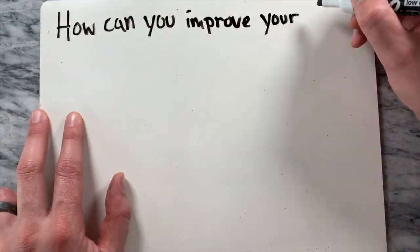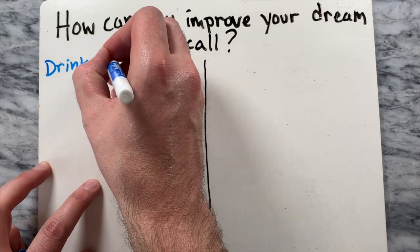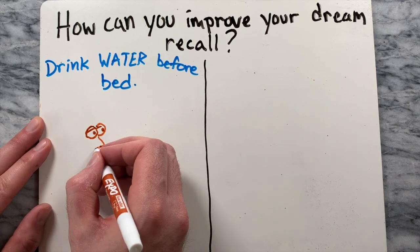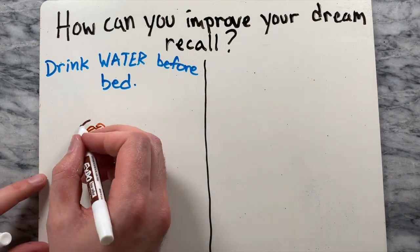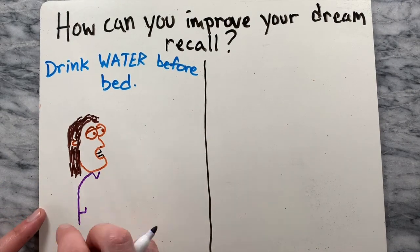How can you improve your dream recall? If you are intent on improving your dream recall, here are a few strategies to try. Researchers suggest drinking water before bed because it will make you wake up at night to use the bathroom. These middle-of-the-night awakenings are frequently accompanied by dream recall.